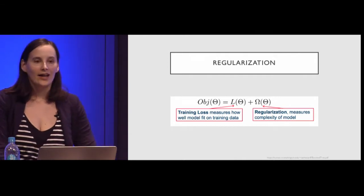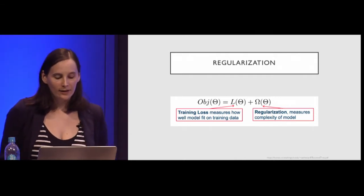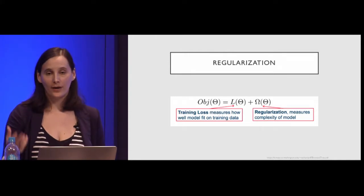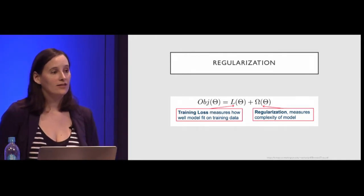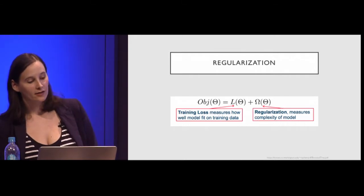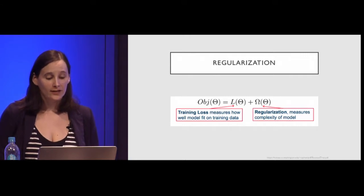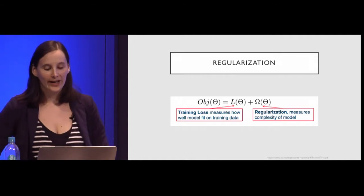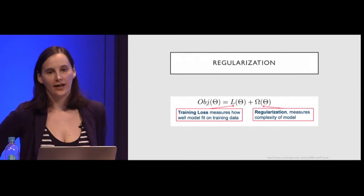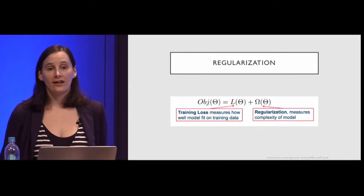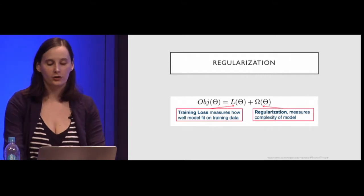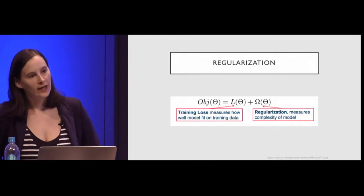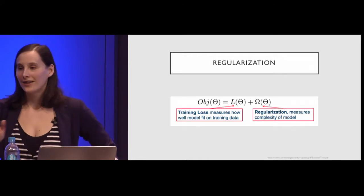Regularization is at the core of most machine learning today. The idea is that on the left you have training loss — your objective function, what you want to minimize or maximize to get the best model. Traditionally you just think about did I get the right answer. But there is also the question: is my model too complicated? The regularization parameter on the right basically penalizes your model for getting too complicated, and this has become kind of mandatory in the last 10 years.